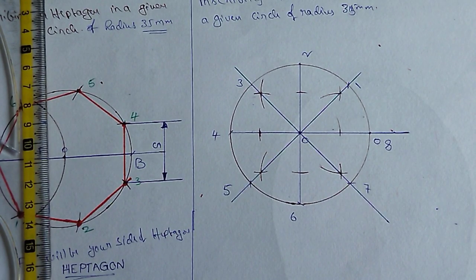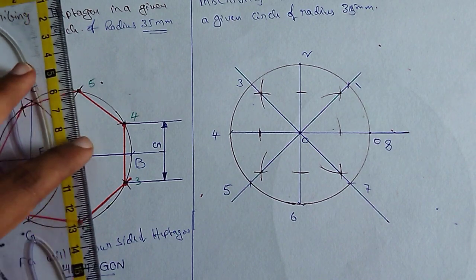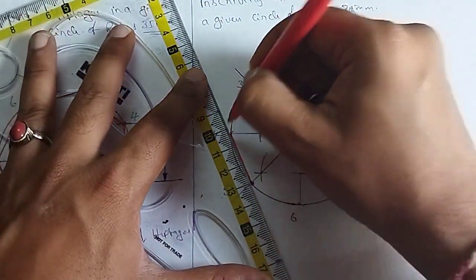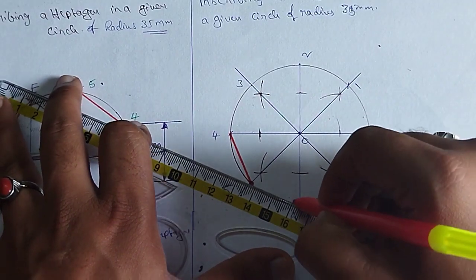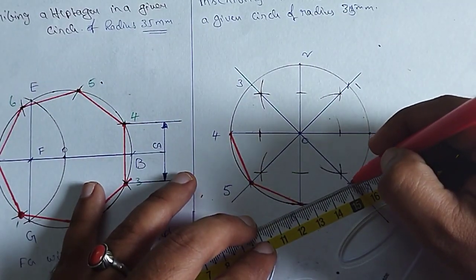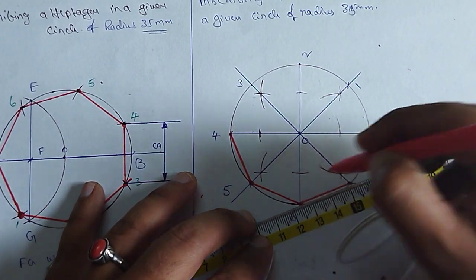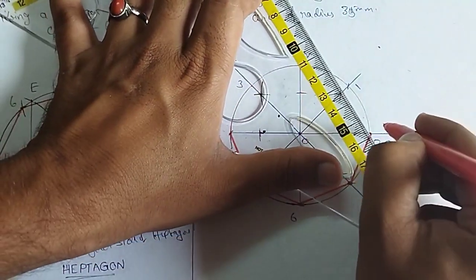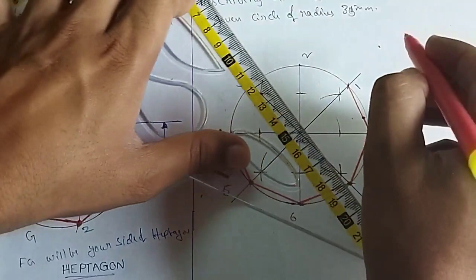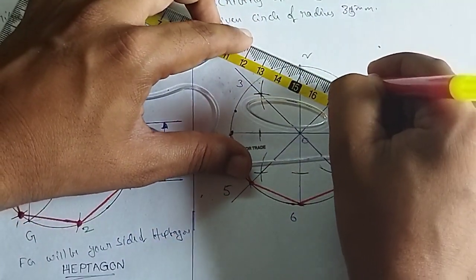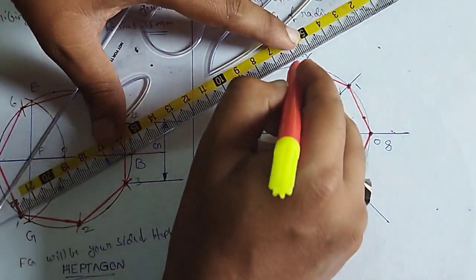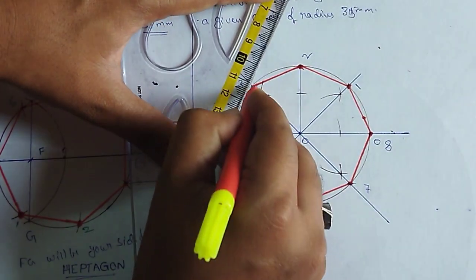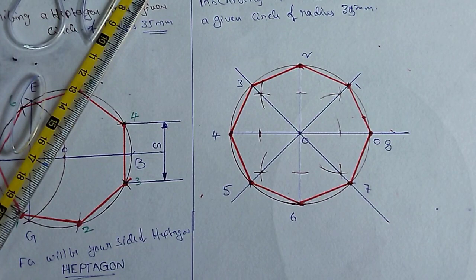We have to use a 2H pencil first, then an HB pencil, then a sketch pen. Join all the points with the help of a scale and pencil. That's it — this is the octagon.